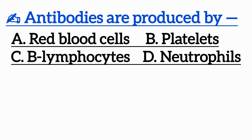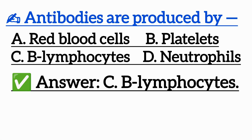Question 6: Antibodies are produced by — Option A: Red blood cells, Option B: Platelets, Option C: B lymphocytes, Option D: Neutrophils. Correct answer is Option C: B lymphocytes.